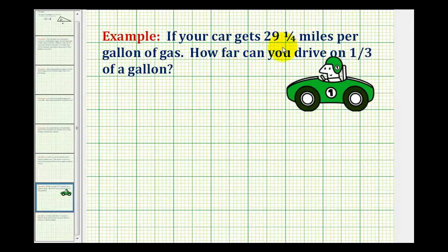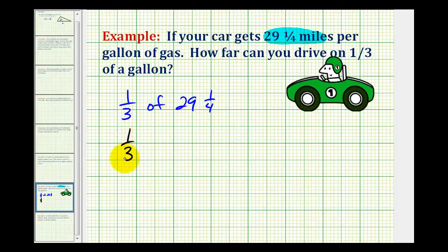If your car gets twenty-nine and one-fourth miles per gallon of gas, how far can you drive on one-third of a gallon? Well, this mileage here is per one gallon of gas. So if you want to know how much you can go on one-third of a gallon, the question really becomes: what is one-third of twenty-nine and one-fourth? And 'of' means to multiply. So we need to multiply one-third and twenty-nine and one-fourth.